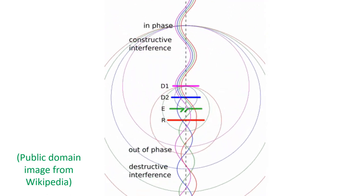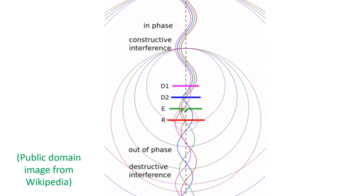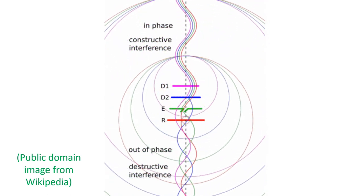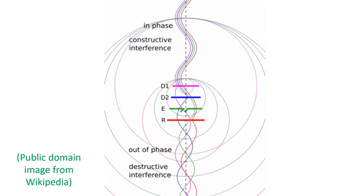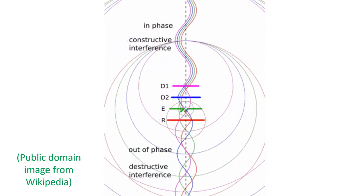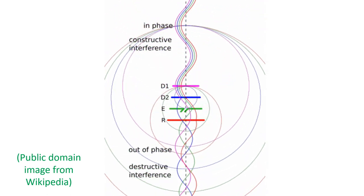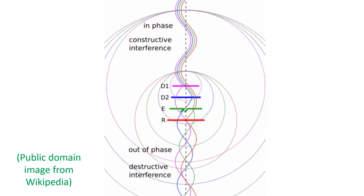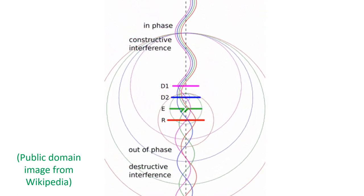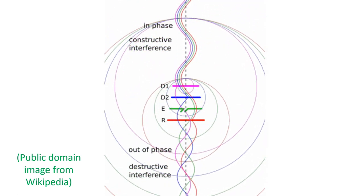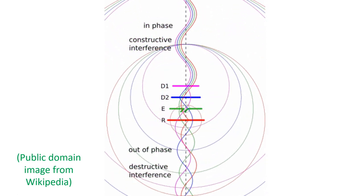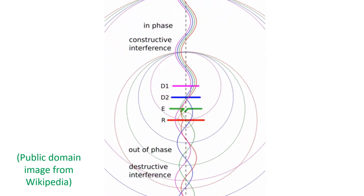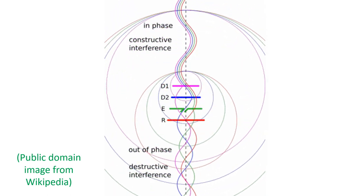The net effect is a stronger signal in the forward direction and a weaker signal in the reverse direction. This is usually mentioned as the front-to-back ratio of the antenna. In the animation, the signals are colour-coded similar to the antenna element for ease of recognition.